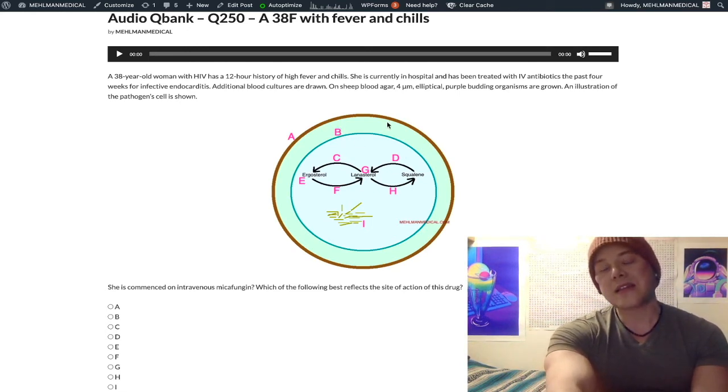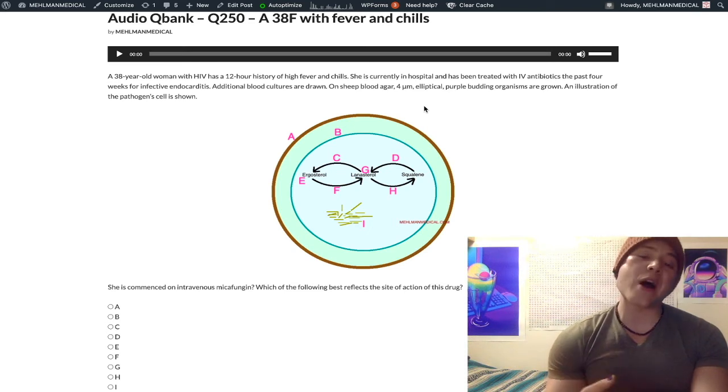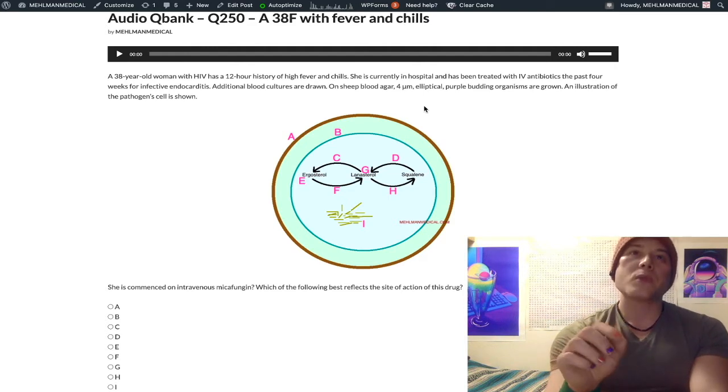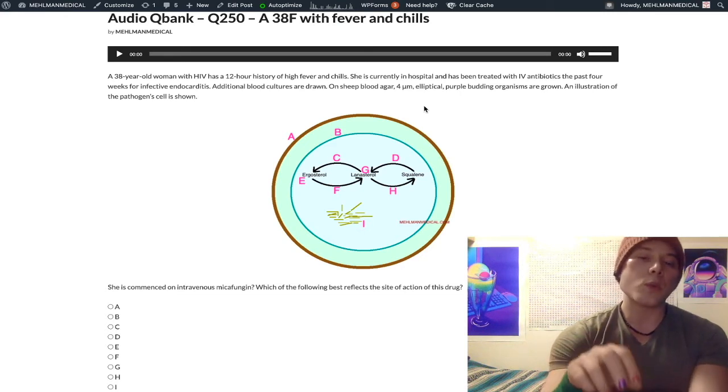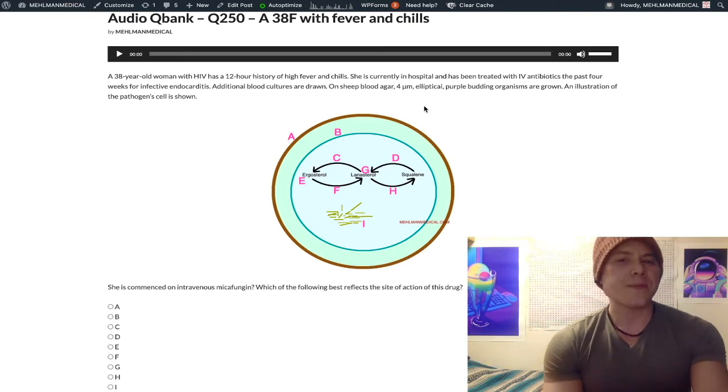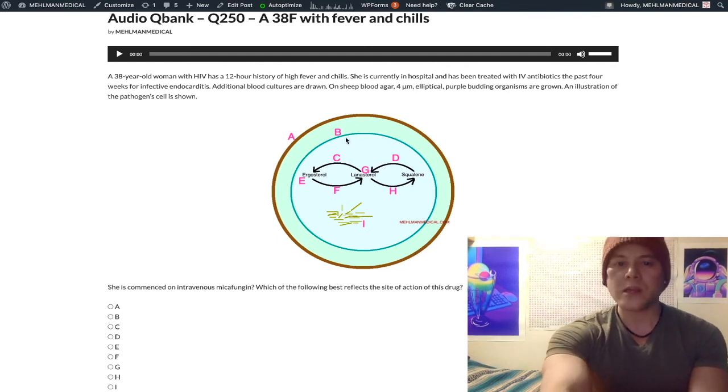And nystatin is going to be used as a mouthwash for oropharyngeal candidiasis, oral thrush. It can also be used topically for vaginal candidiasis, vulvovaginal candidiasis. A quick point I want to make without digressing too much is whilst we use nystatin mouthwash for oropharyngeal candidiasis, we use oral fluconazole for esophageal candidiasis. Clearly, a mouthwash isn't going to treat an esophageal infection, right? I've seen students screw that up. And looking at some of the other answer choices,